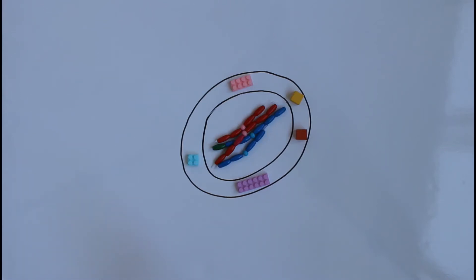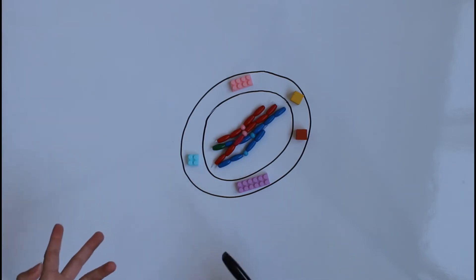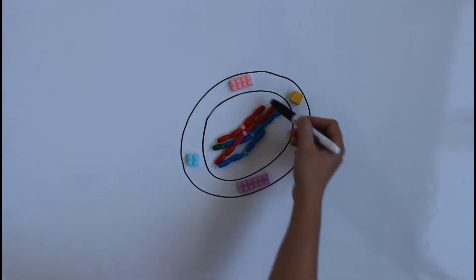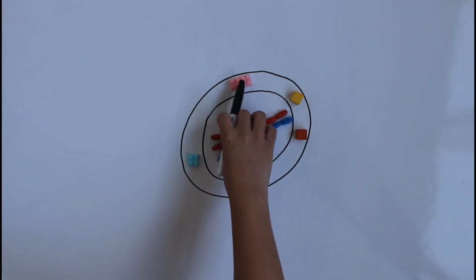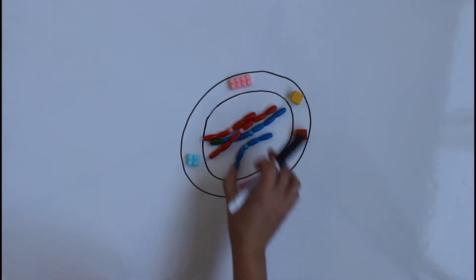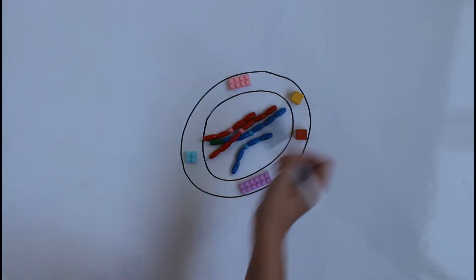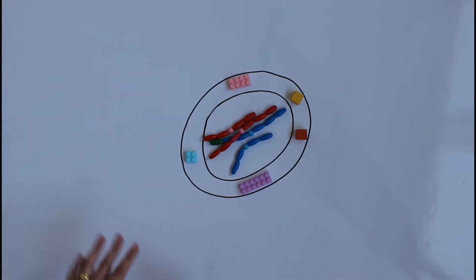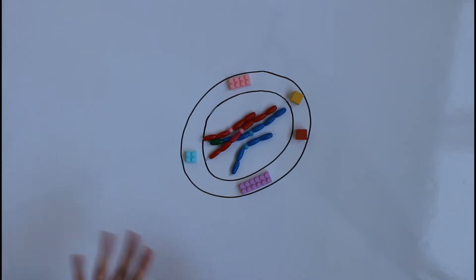Hello guys, today I'm going to show you an animation to help you understand the process of interphase and mitosis. I'd like you to understand what's going on first before memorizing names. This is a demonstration you can do at home. Here I represent a cell with the nuclear membrane and the cell membrane. This is my DNA inside the cell, these blocks represent the organelles, and these little cubes represent other substances such as enzymes inside the cell.